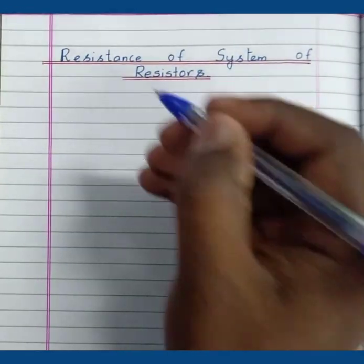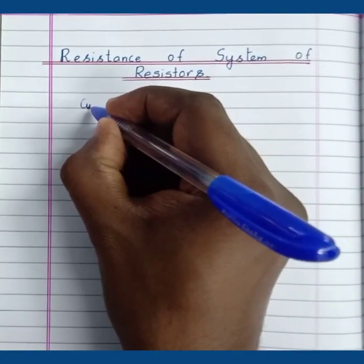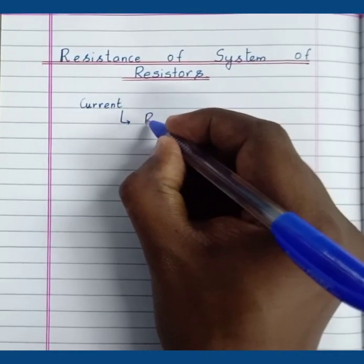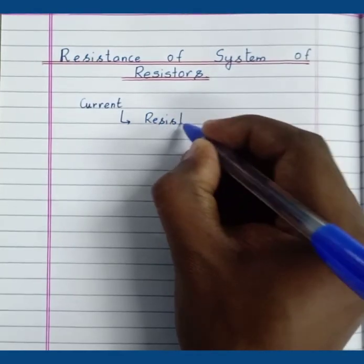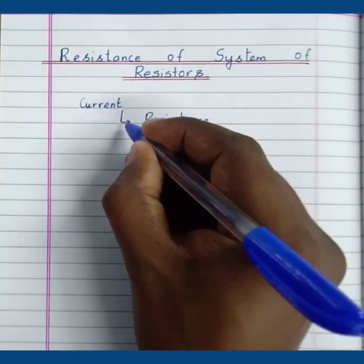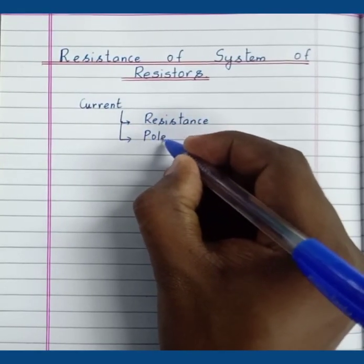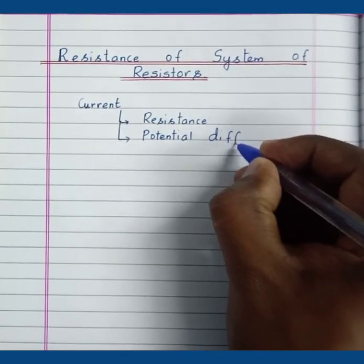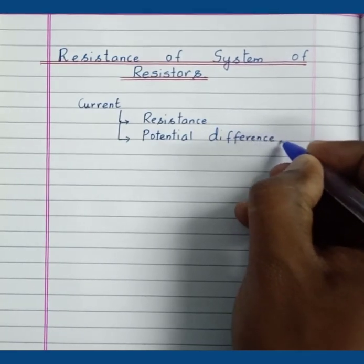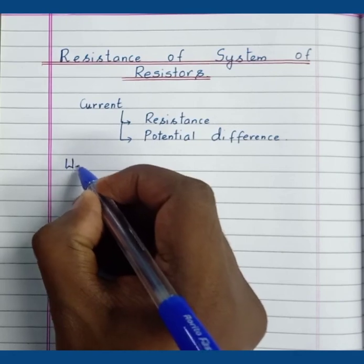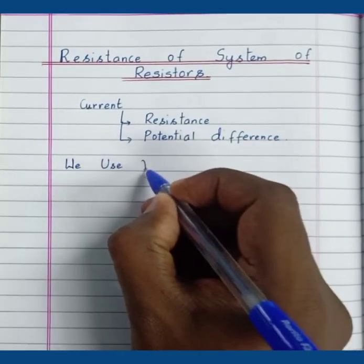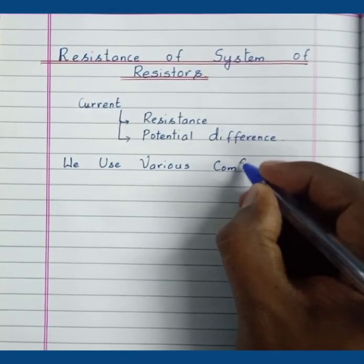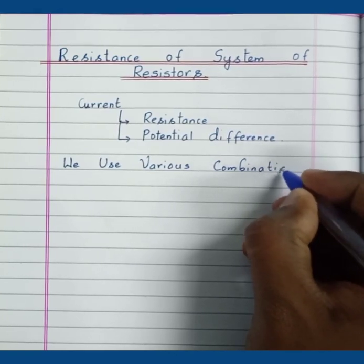In this video we learn about the resistance of a system of resistors. Current mainly depends on the resistance of the conductor and the potential difference across its ends. We have learned that current can be regulated or controlled by using resistors.